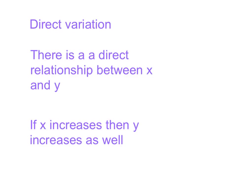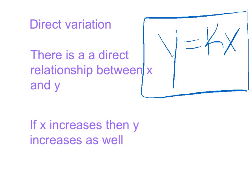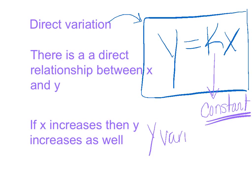What exactly does direct variation mean? Well, there is a direct relationship between X and Y. What we mean by direct relationship is that if X increases, then Y increases as well. There's going to be a formula that we memorize to go along with this, and that formula is Y equals KX. Box that in, star that — that is our formula for direct variation. This K value is called the constant of proportionality. It is the constant of proportionality, and I would read this as Y varies directly as X.